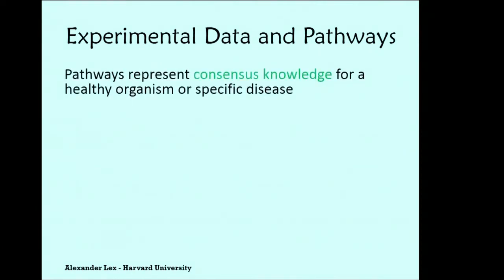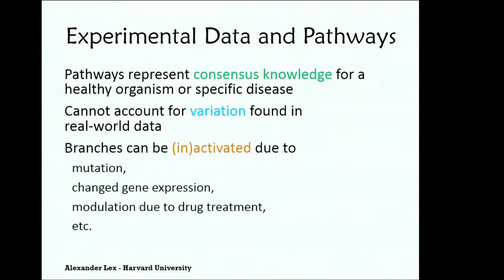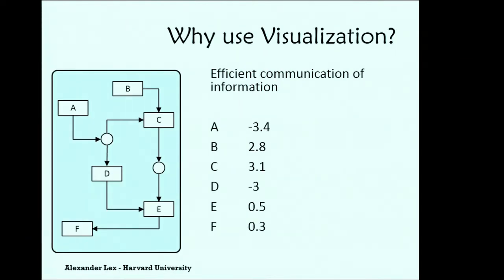So what is it with experimental data and pathways? Well, pathways, as they are, for example, presented in KEGG, they represent consensus knowledge for a healthy organism or for a specific disease. So it's kind of like a generalization of what is happening in a model organism. It's not really what is happening in my cell. So therefore, this data cannot account for the variation which you find in the real world. So if you're looking at your cell, the pathway might be slightly different because you have a changed gene expression or because one of the genes is mutated, or because you are trying to modulate what is happening in the pathway by using drugs. So it's important to see experimental data in the context of pathways. And this is what our technique is about.